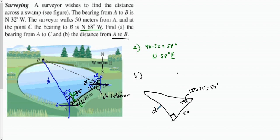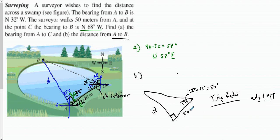We're looking for side d. Once we have our angle and sides of a right triangle, we figure out our trig ratio. We're given an angle — the 50-meter side is adjacent to 54 degrees, and d is opposite to 54 degrees.